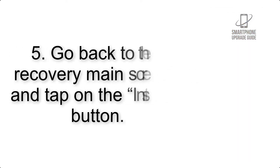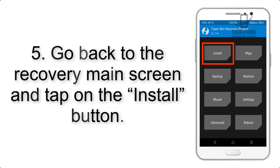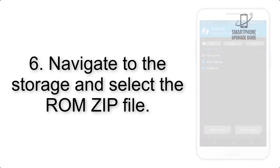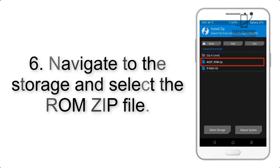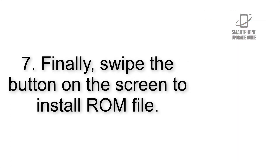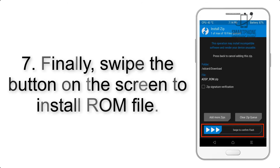Step 4: Swipe the button to wipe the device. Step 5: Go back to the recovery main screen and tap on the Install button. Step 6: Navigate to the storage and select the ROM zip file.